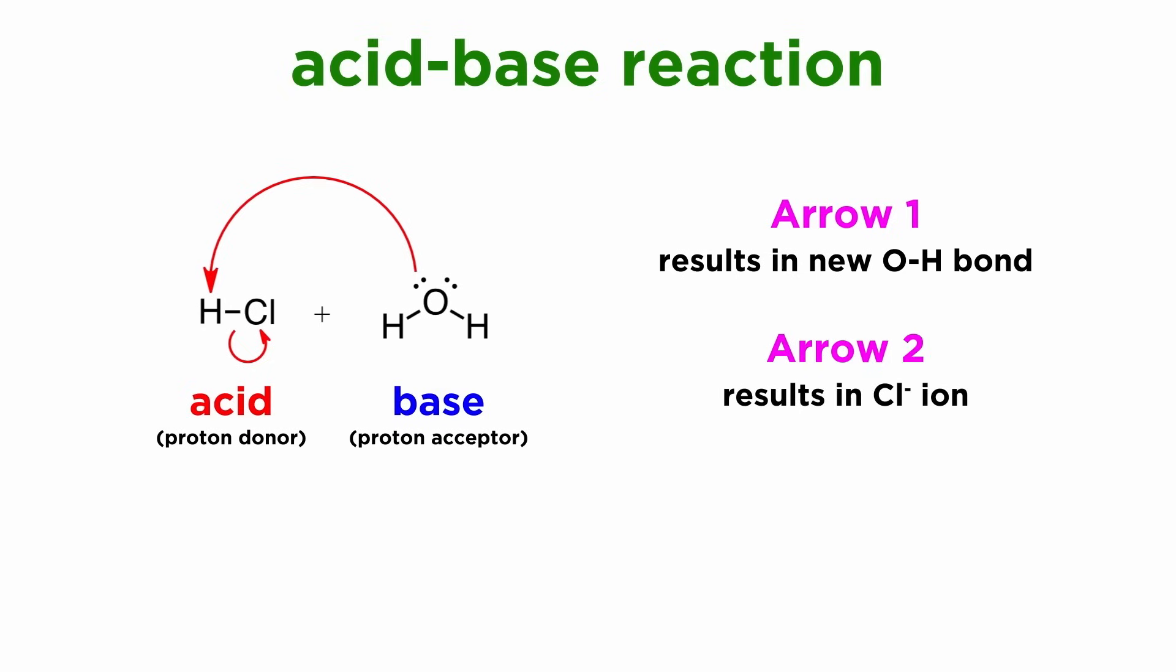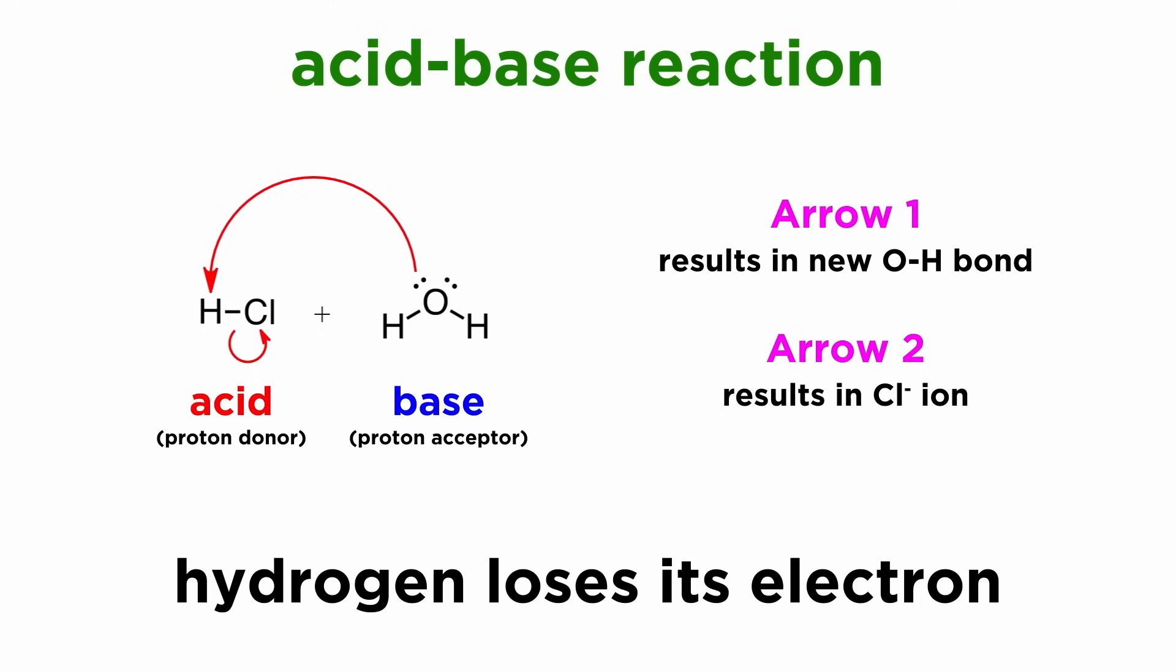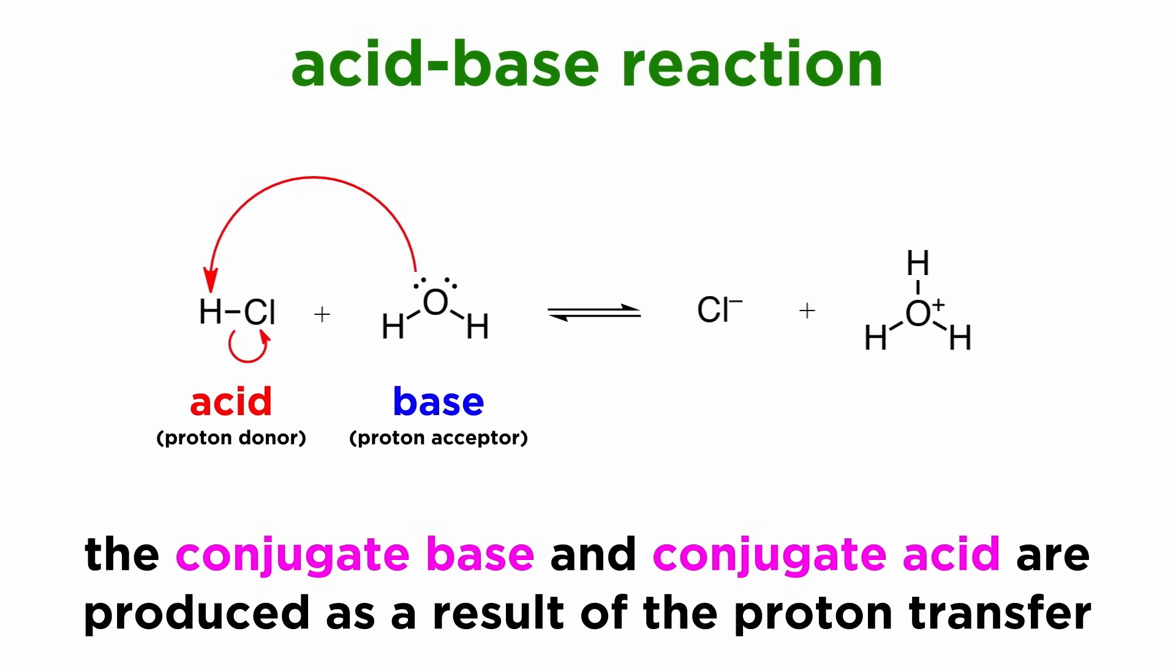While the electrons in this bond remain with the chlorine atom, resulting in the chloride ion. This means hydrogen lost its electron, which is why we refer to this as proton transfer. With any such acid-base reaction under the Bronsted-Lowry model.